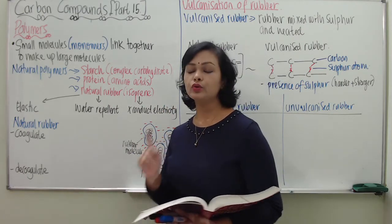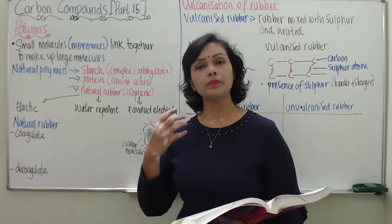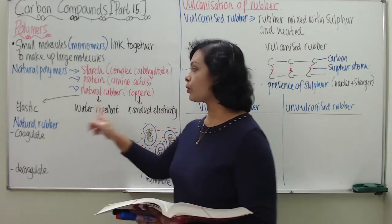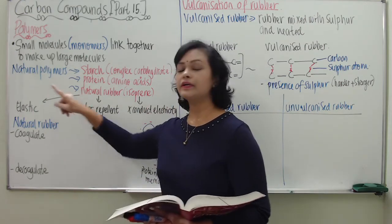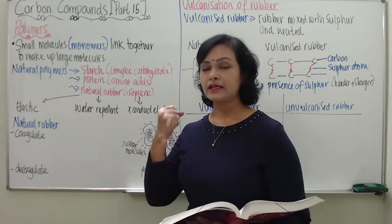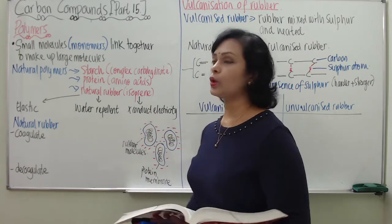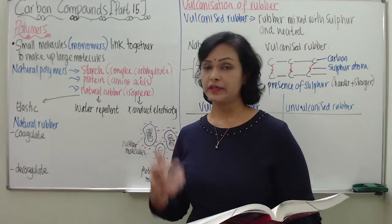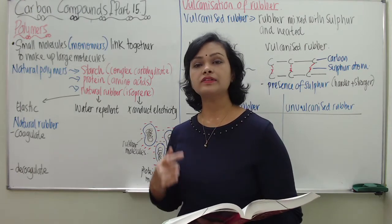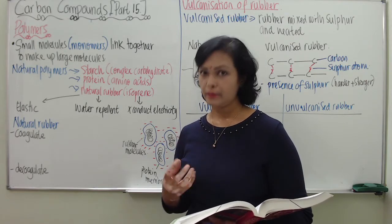Now why do humans love the properties of rubber? The main property that we love about rubber is its elasticity. Natural rubber is elastic. It is also water repellent and cannot conduct electricity, thanks to being a covalent compound. So the elasticity plays an important part in the usage of rubber by mankind.